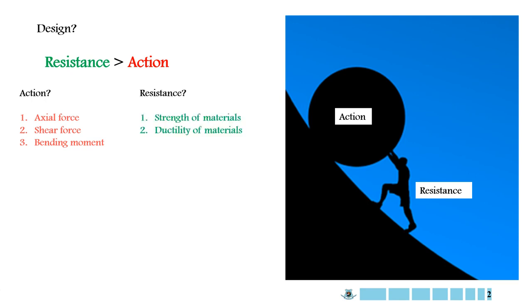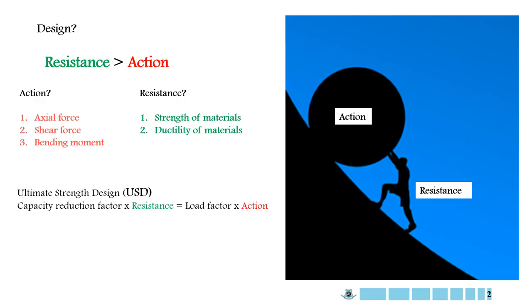In any structural element, resistance comes from the material itself. So we have to ensure the strength and ductility of that material is sufficient to resist the actions. Here I generalize the concept of ultimate strength design method, or USD method. Professor Rob has already discussed about the USD method in the previous lecture, so I will not describe it here again.